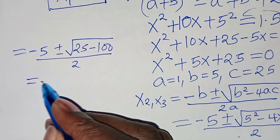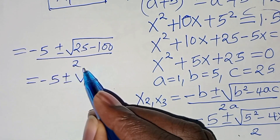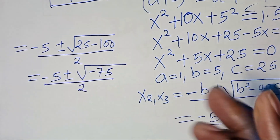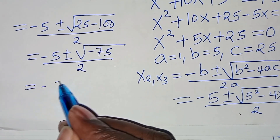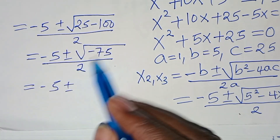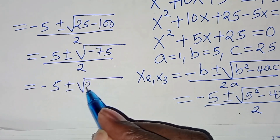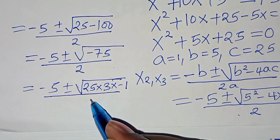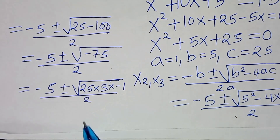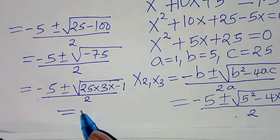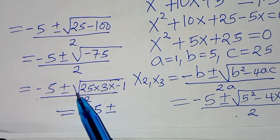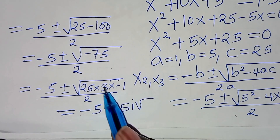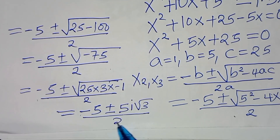Continuing, this is negative 5 plus or minus the square root of negative 75, divided by 2. We can express negative 75 as 25 times 3 times negative 1. Taking the square root: √25 is 5, √(−1) is i, and we keep √3. So this becomes negative 5 plus or minus 5i√3, all divided by 2.